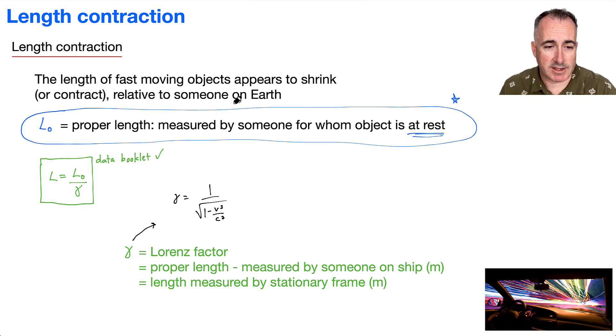What's proper length? That's this L0. And then L is the length measured by stationary frame. This here is the proper length measured by someone on the ship, so to speak, or someone who's moving.